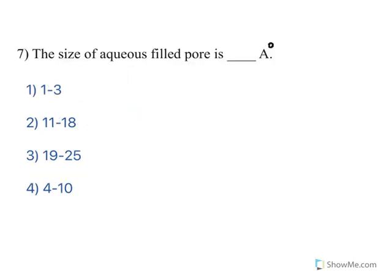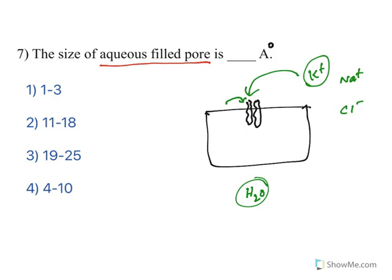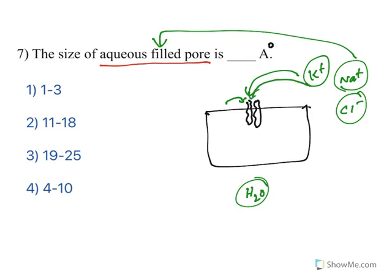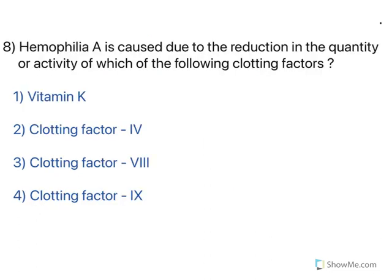The size of aqueous-filled pores: cells have ion channels that form pores, allowing ions like potassium, sodium, and chloride to pass through. These pores are made up of aqueous (water-filled) channels. There are separate potassium, sodium, and chloride channels. The diameter matters because only specific ions can pass. The pore diameter ranges from 4 to 10 angstrom units, as there are different kinds of ions.